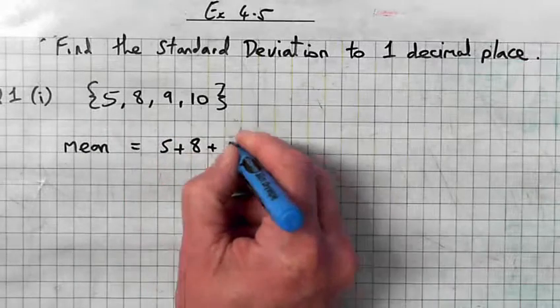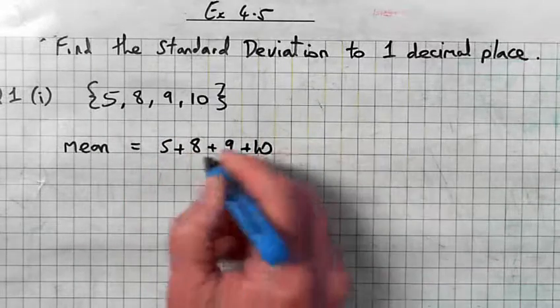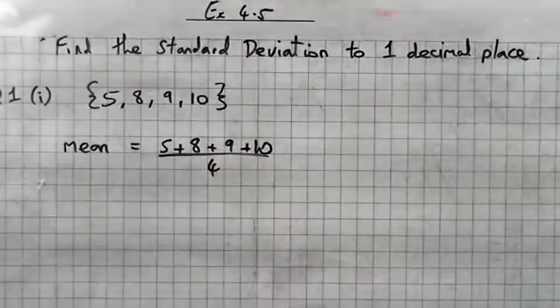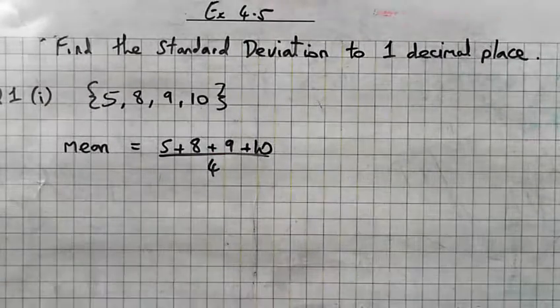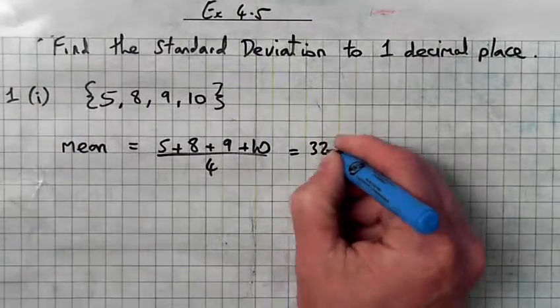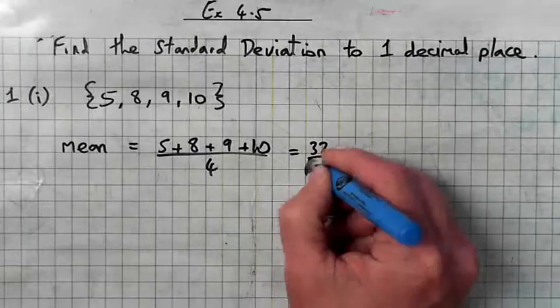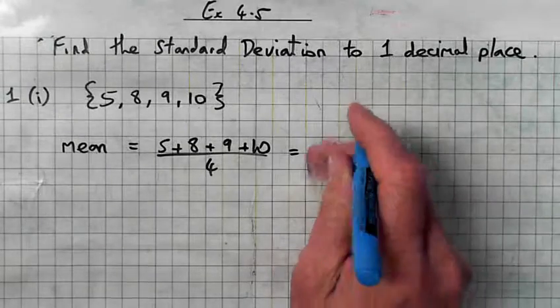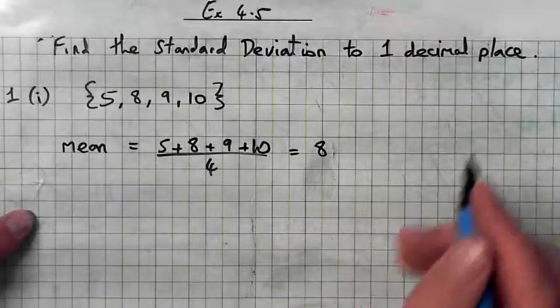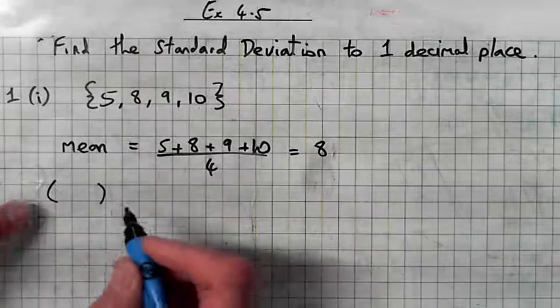So 5 plus 8 plus 9 plus 10, and there are four numbers to divide by 4. So 32 divided by 4 is 8, so the mean is 8.